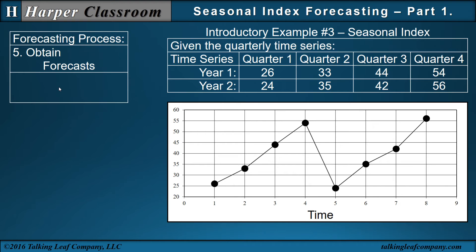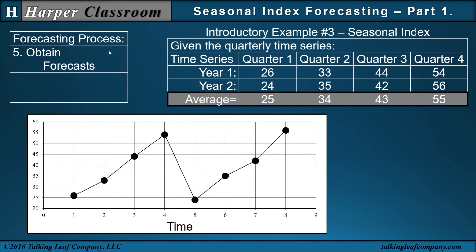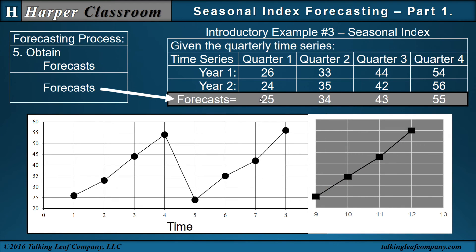The next step is to obtain your forecasts. In this simple example, since the variability between the years is random, if we take the average of each quarter between the years, that average turns out to be our forecasts. So we can plot these forecasts — 25, 34, 43, 55 — and we have our forecast for the next year. Note that these forecasts were obtained within the seasonal index technique without using indexes. So even though you have the approach of seasonal index, you don't have to use seasonal indexes — but we will in part two.